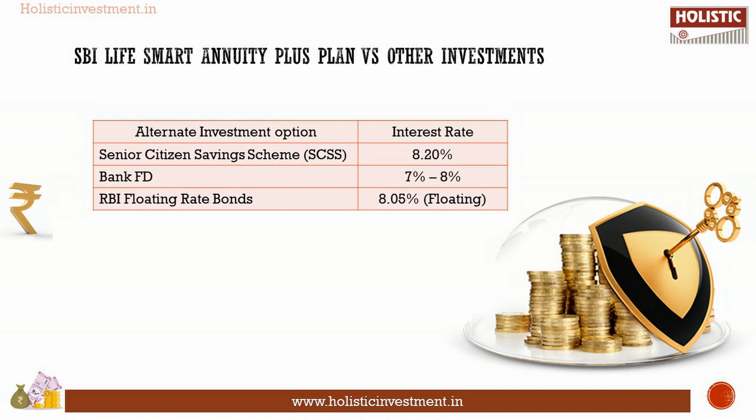Both bank FDs and senior citizen savings schemes offer fixed returns throughout the tenure; however, the interest rate of RBI floating bonds varies. These instruments provide a regular stream of income similar to annuity plans, and at the same time you can utilize the funds as you wish throughout your lifetime. All these options provide fixed interest, and the returns and liquidity are better in these alternate options when compared to SBI Life Smart Annuity Plus.